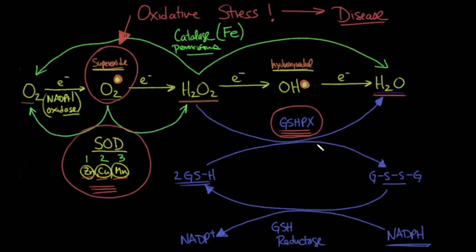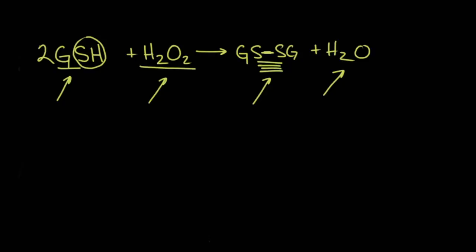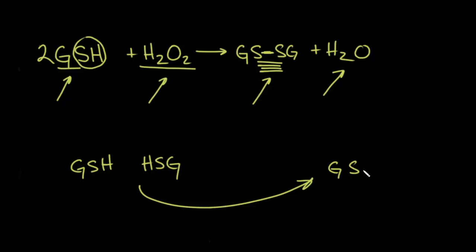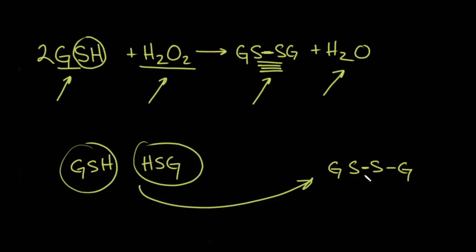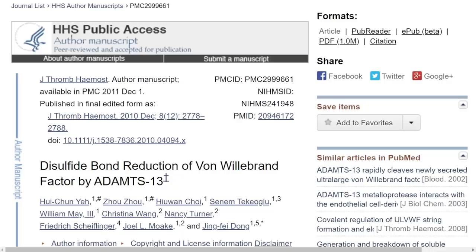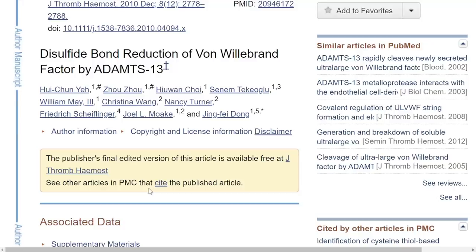Here we have two glutathiones being oxidized to a connected disulfide bond, and hydrogen peroxide turns into water. That's important to understand — you're going from GSH to GSSG: two independent molecules now get connected. I want to plant a little seed with this article which says that disulfide bond reduction of von Willebrand factor by ADAMTS13. Von Willebrand factor actually comes together and polymerizes, in part, with disulfide bonds.